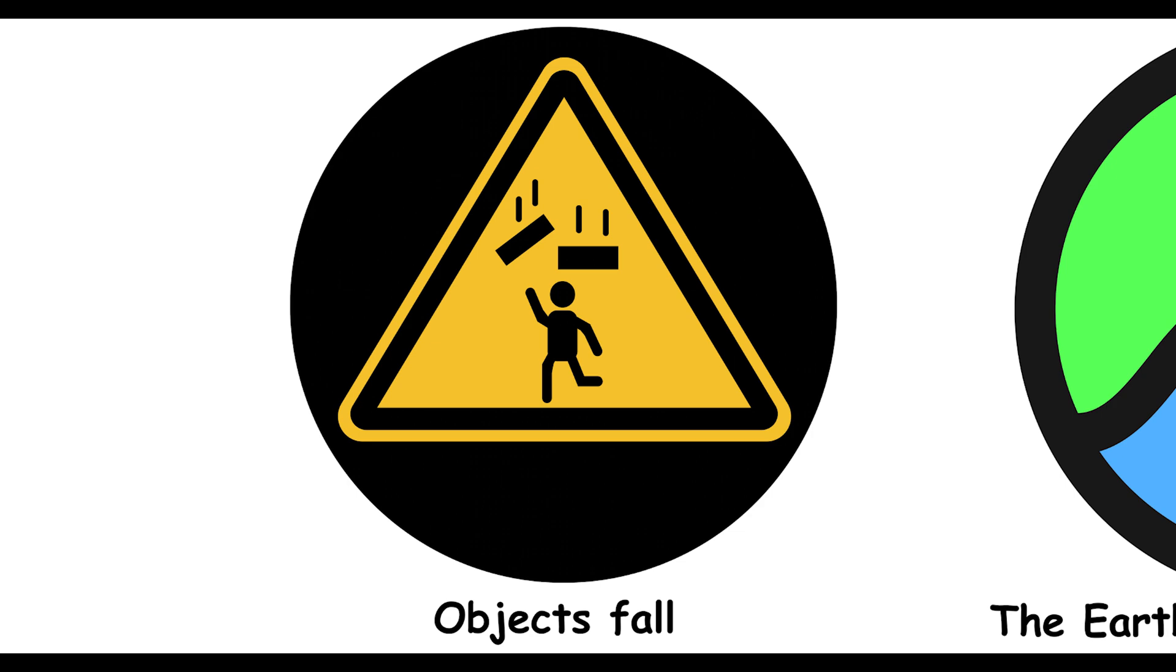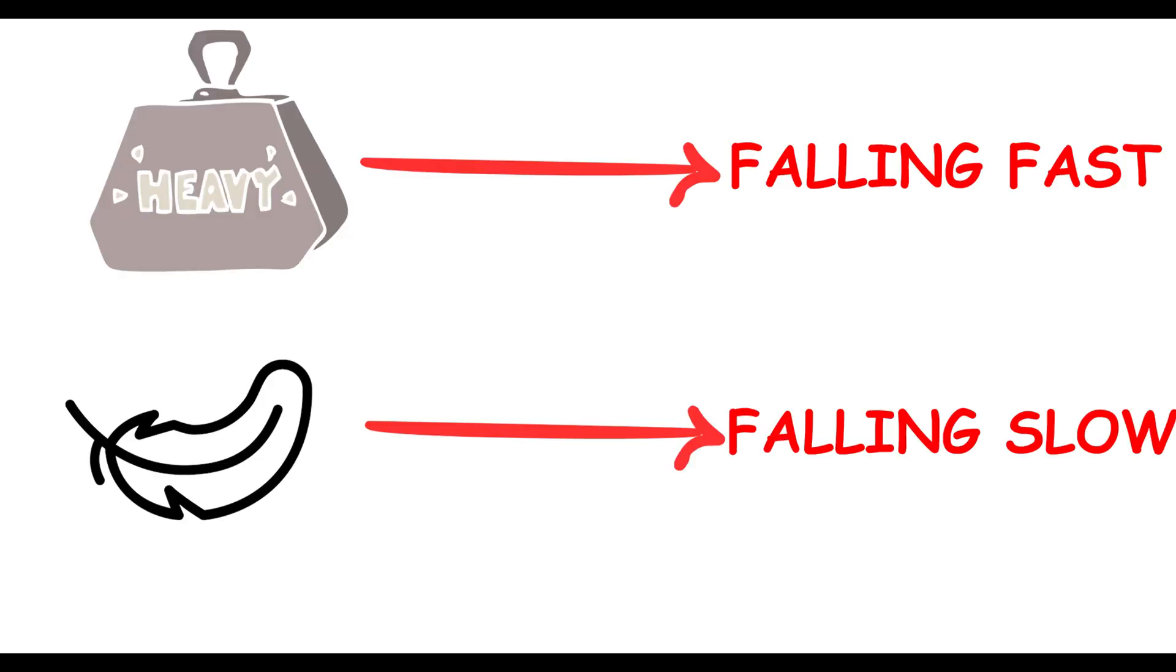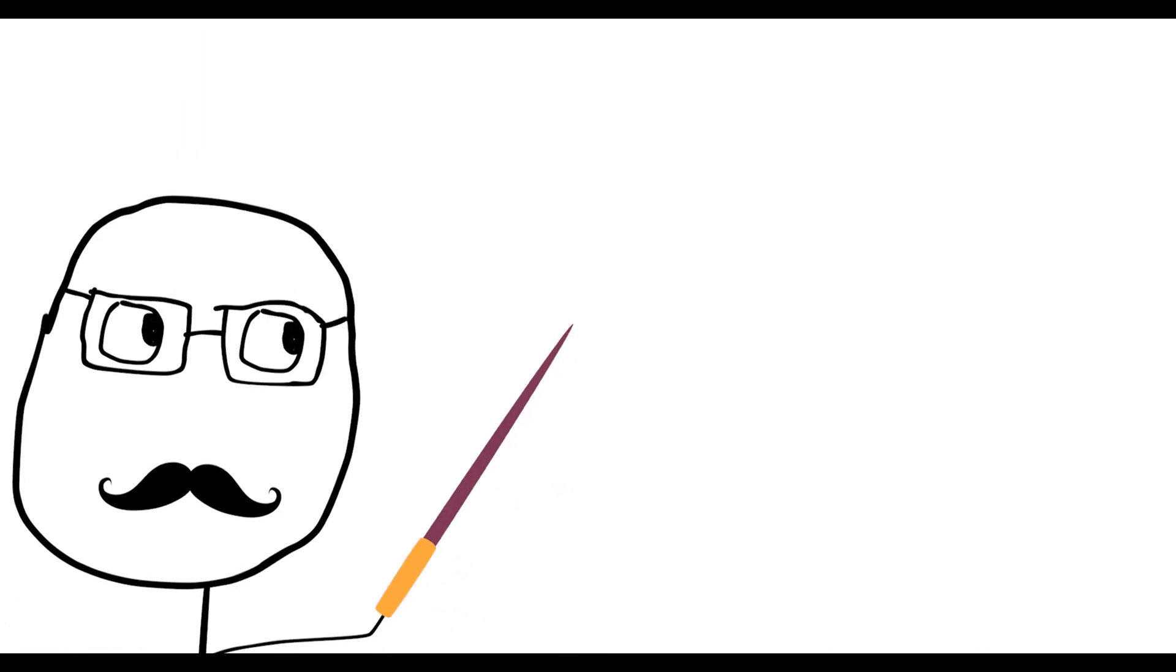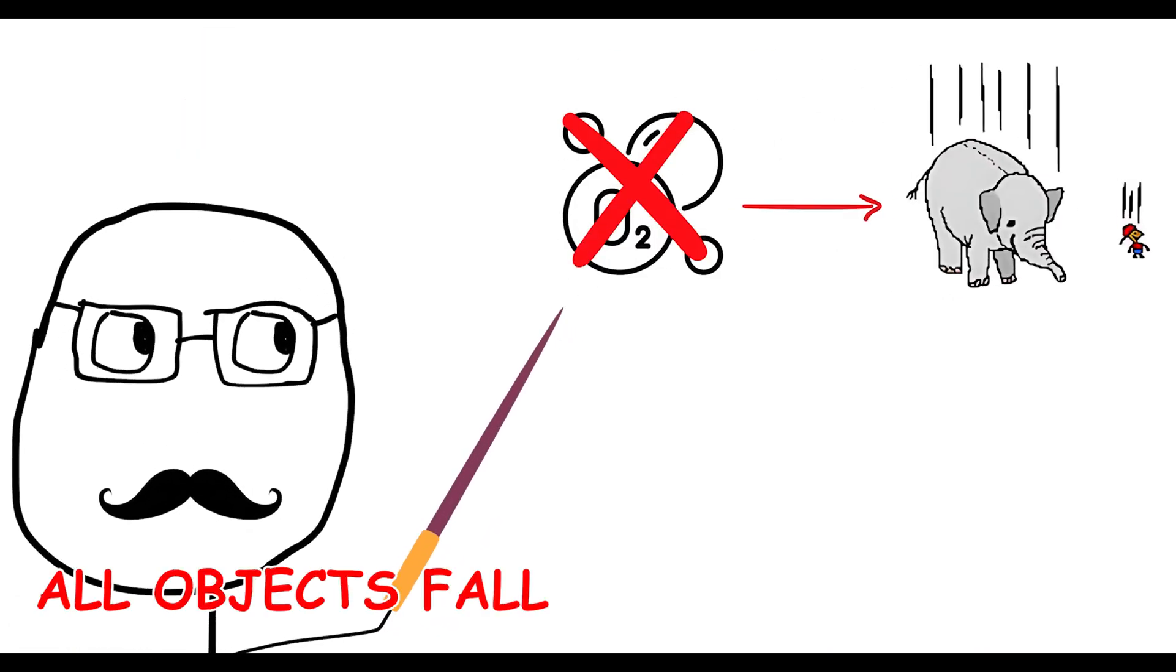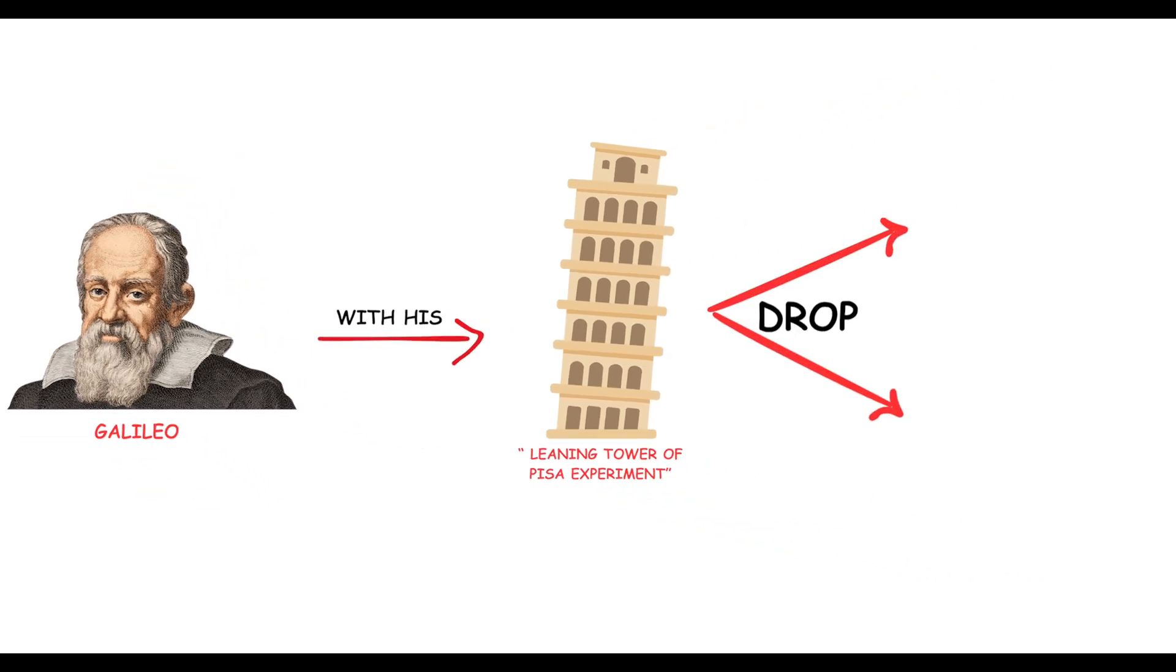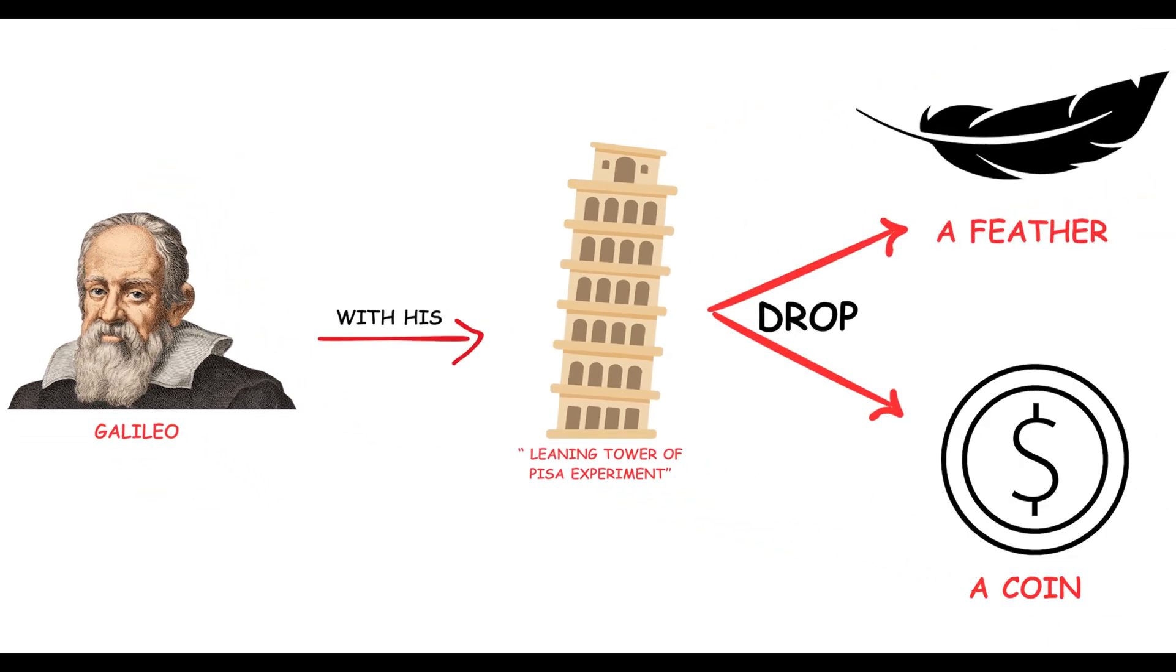Objects fall at the same speed regardless of weight. Think heavier objects fall faster than lighter ones? Let's put that to the test. Actually, in the absence of air resistance, all objects fall at the same speed. Galileo demonstrated this with his famous Leaning Tower of Pisa experiment. Try dropping a feather and a coin in a vacuum and see them fall together.